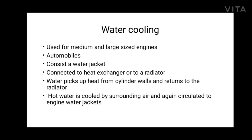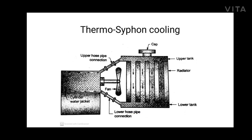There are some types of water cooling. The first type is thermosiphon cooling. The diagram of thermosiphon cooling is shown on the screen. The system is designed so that water may circulate naturally because of the density difference between hot water and cold water. The system consists of a radiator having upper and lower tanks connected to upper and lower water jackets of the cylinder respectively through pipes. The hot water in the jacket rises and flows into the upper tank due to its lower density.